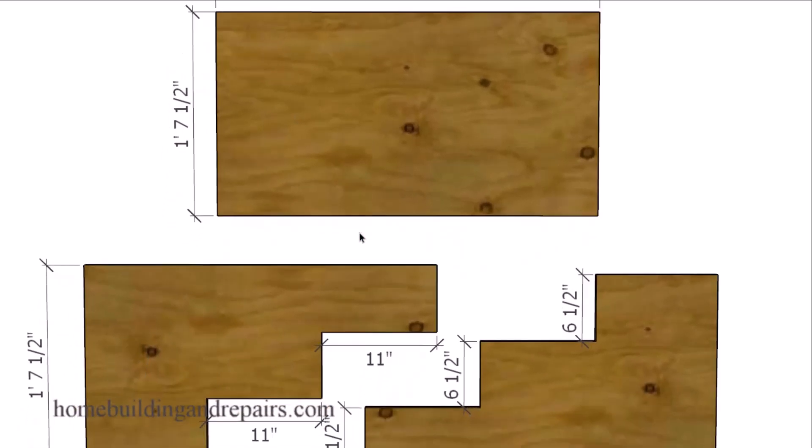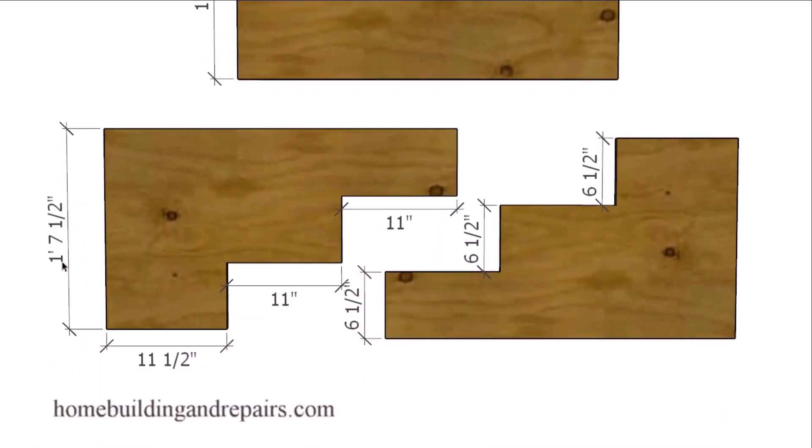And then the measurements for the side boards will be 1 foot 7 and a half inches and a measurement on the bottom of 2 foot 9 and a half inches. And then 6 and a half inch risers all the way up. Again, these are measurements you can change also. However, if you do, you will need to change some of the other measurements in the stairway.